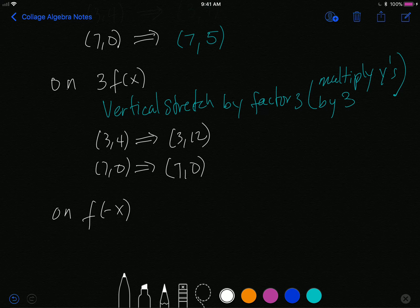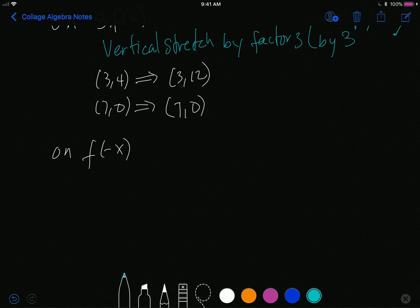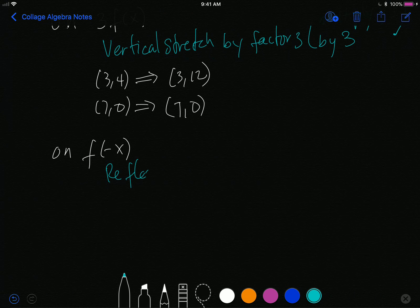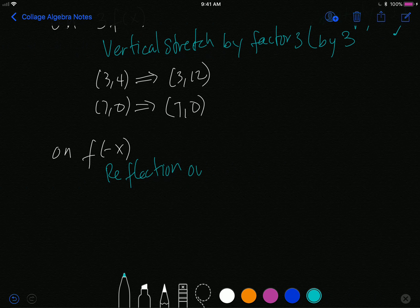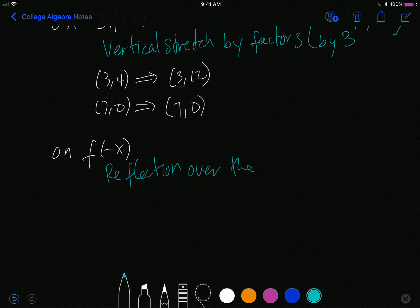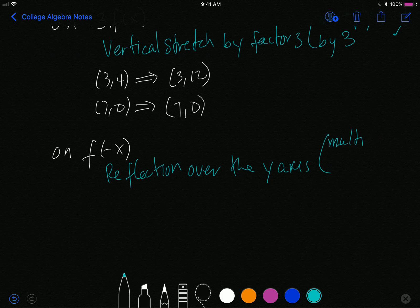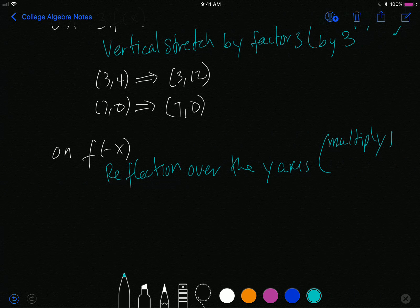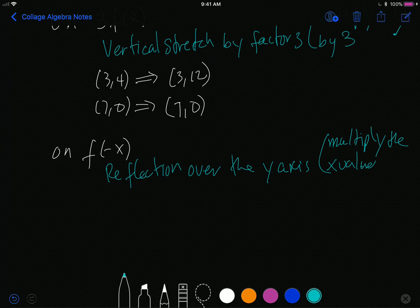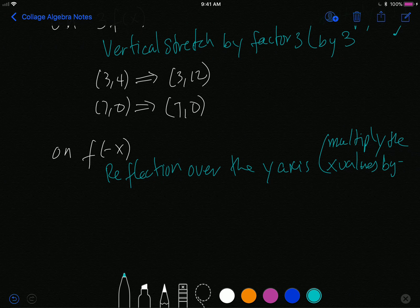And so my transformation is a reflection over the y axis. But this really means multiply the x values by negative 1.